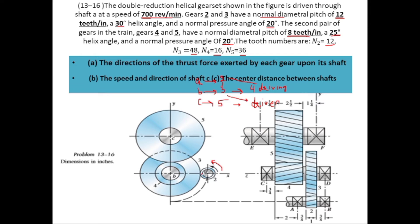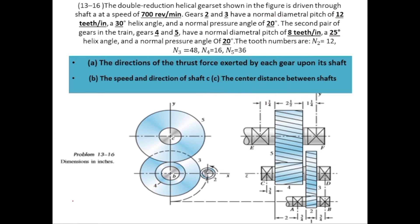From the diagram of the gearbox, gear 2 is rotating in the counter-clockwise direction. It is meshed with gear 3, so gear 3 will rotate in the clockwise direction. Since gear 4 is also mounted on shaft B, gear 4 will also rotate in the clockwise direction. Gear 4 is meshed with gear 5, so gear 5 will rotate in the anti-clockwise direction. Since gear 5 is mounted on shaft C, shaft C will also rotate counter-clockwise.